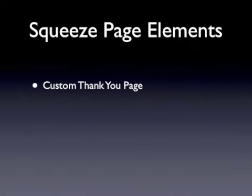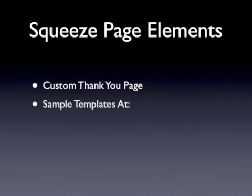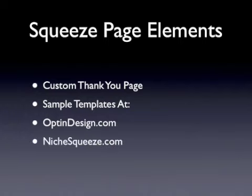Remember that until they actually confirm that they want to be a member of your list by clicking on the activation link contained within the email that the autoresponder service sends to them, they aren't actually added to your list and you don't have permission to email them. You want to emphasize clear instructions on how they must confirm their request to join. A lot of list builders tend to use the default settings in their autoresponder account, where once a visitor enters their name and email into the opt-in form, they are directed to a thank you page housed on the provider's website — wrong move.